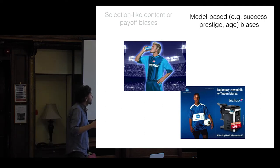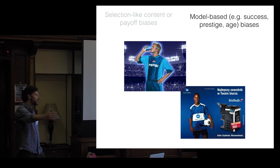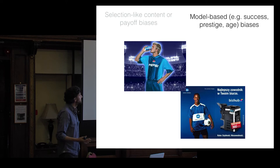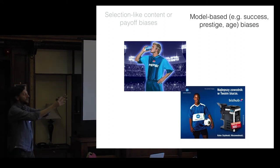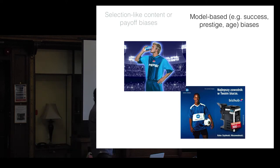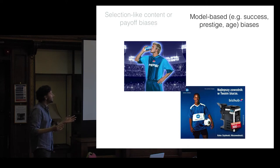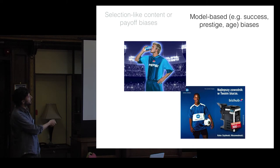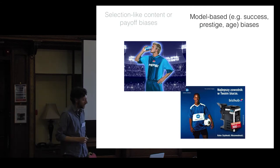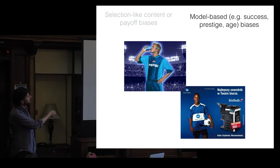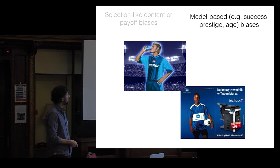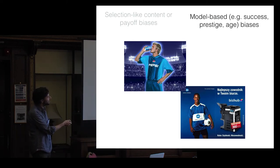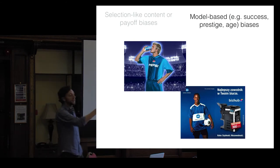We also have model-based biases, where you copy things not just based on their intrinsic efficiency but based on the characteristics of the person who exhibits those traits. Joe Henrich talks about prestige bias — copying the cultural knowledge of people who are particularly high status. This can be adaptive, but sometimes goes wrong, like when advertisers get David Beckham to advertise Pepsi and people become more likely to buy it. My favourite example is Ronaldinho advertising photocopiers — not quite sure what the connection is, but we seem to copy people based on their prestige.